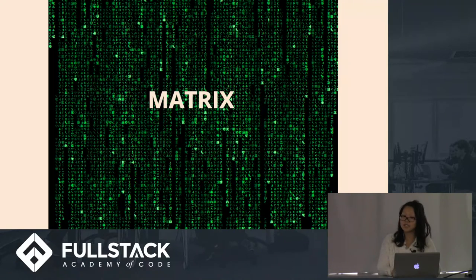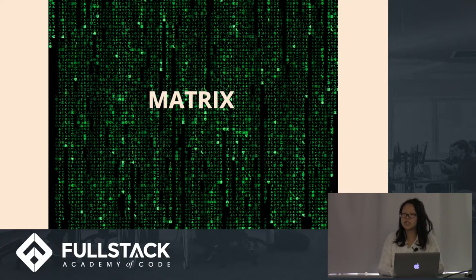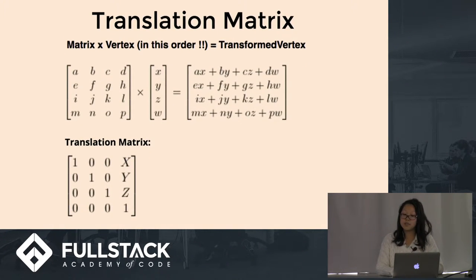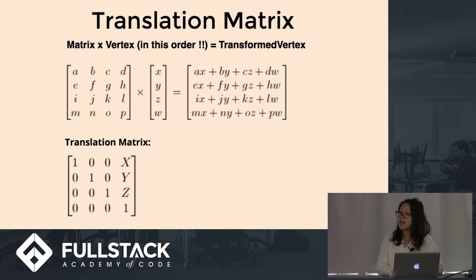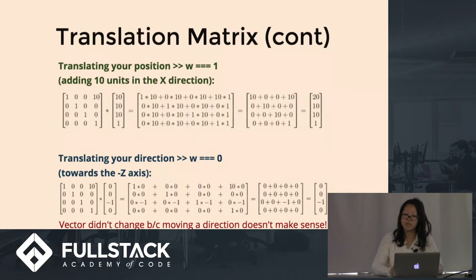That leads us to matrices. A matrix, or the singular matrix, is simply an array of numbers with a predefined number of rows and columns. The way we transform our vertex is to multiply it by a 4×4 matrix. Once you sum up your matrix multiplication, you will get a newly transformed vector. There is also a sample transformation matrix where X, Y, and Z are the values you want to add to your position.